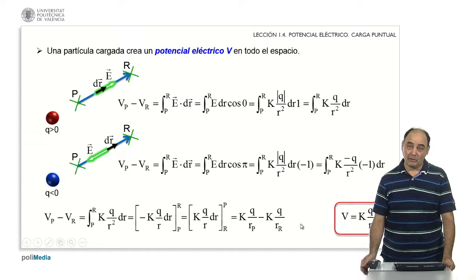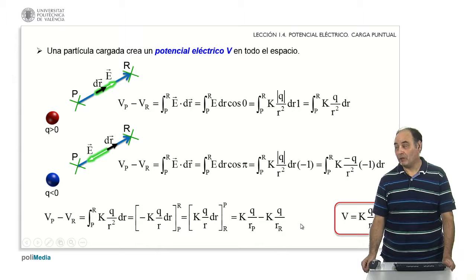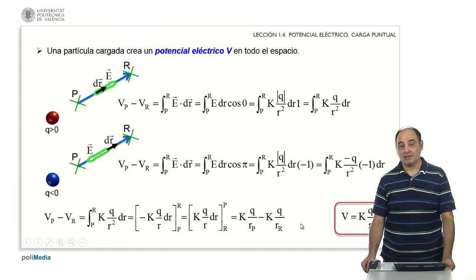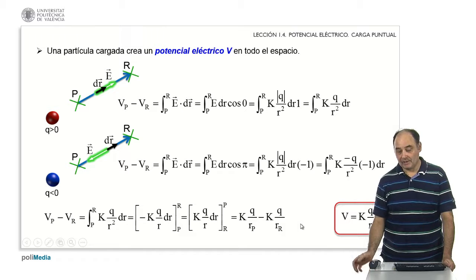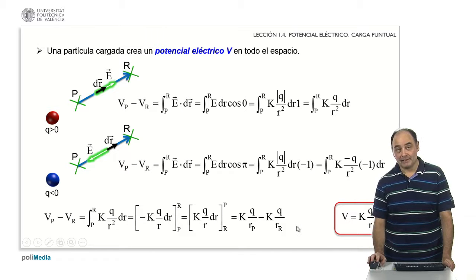Unlike the electric field, which was an analogous expression in its modulus but went with distance squared, note that positive charges give positive potential because q is positive. If q is negative, the potential I will get is negative.